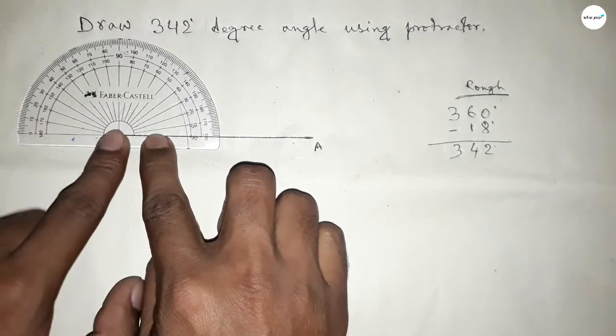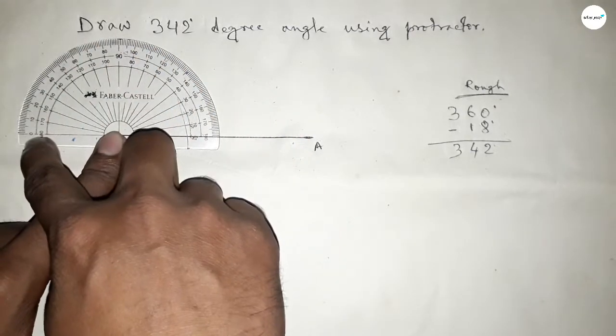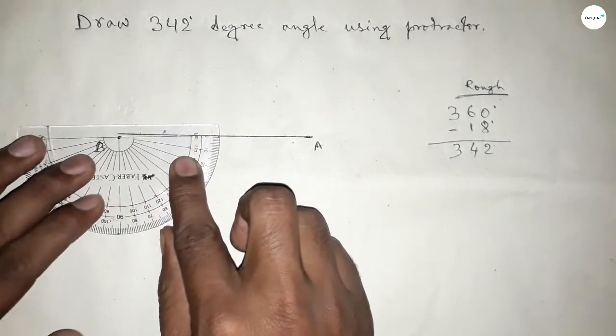Now putting the protractor on point B by this way and counting the angle. So this is up to 180 degree angle, plus putting the protractor on point B by this way.